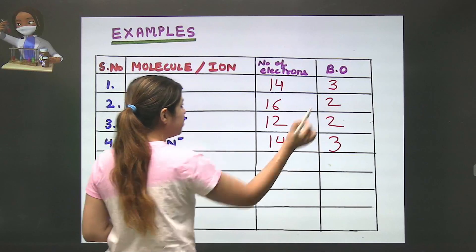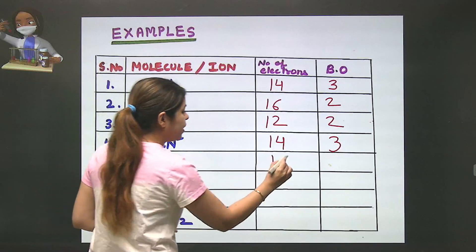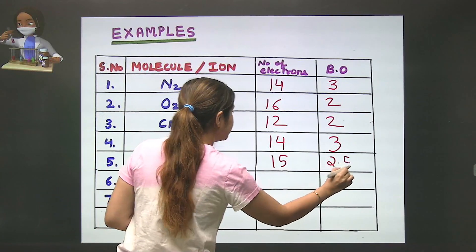For NO, nitrogen is 7, oxygen is 8, so 7 plus 8 equals 15 total electrons. For 15, the bond order is 2.5.